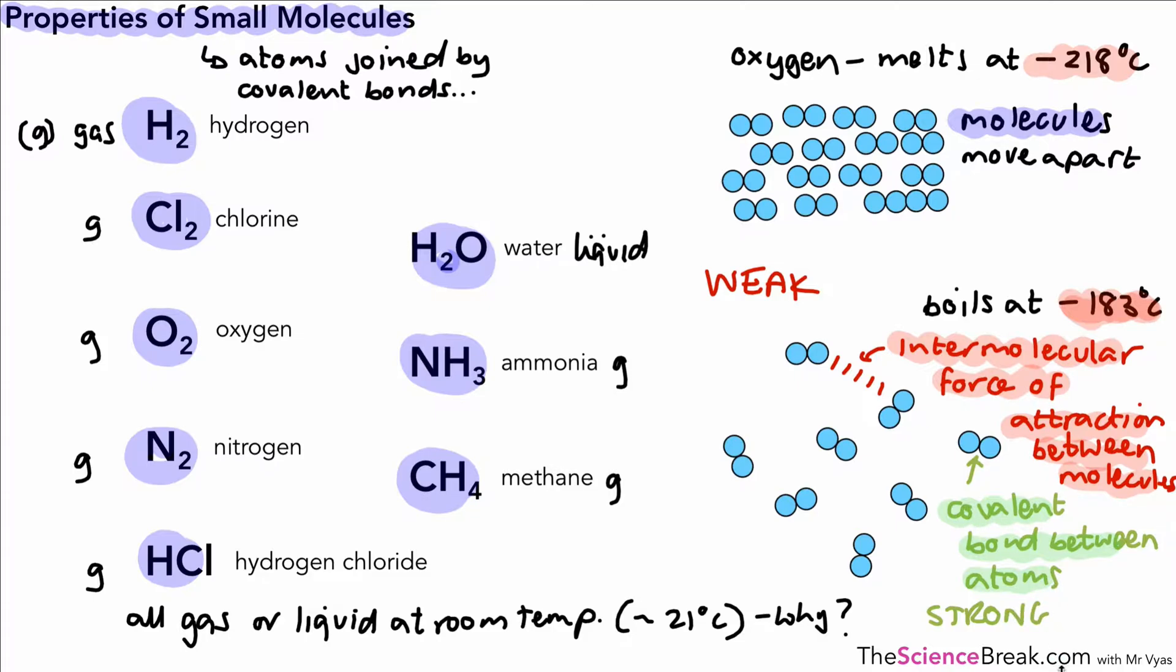So in order to melt our oxygen and boil our oxygen, we only need to overcome the intermolecular forces of attraction between the molecules. And this explains why. So we can write that out in a sentence.